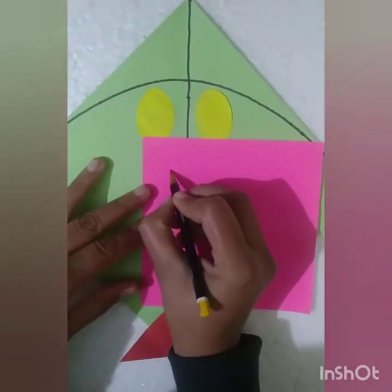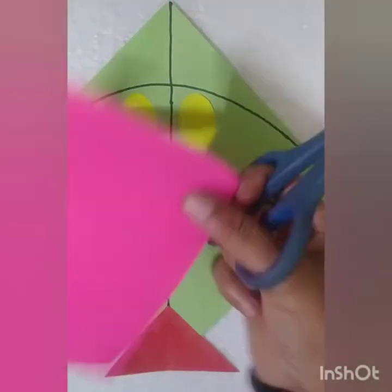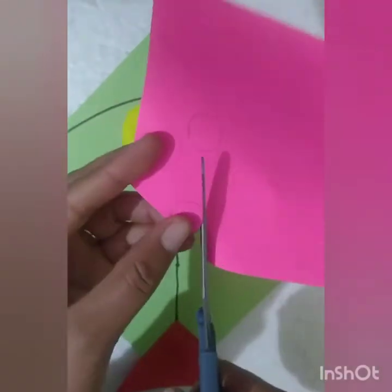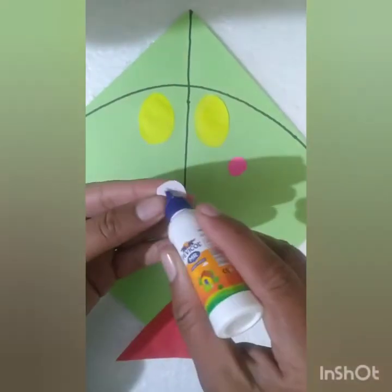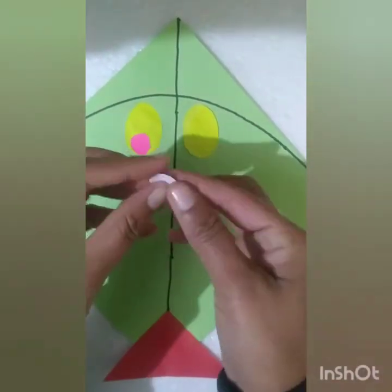Now children, take an origami sheet and cut it into a circle shape. Very good. So now children, we will paste the circle shapes in this way.